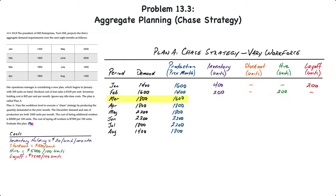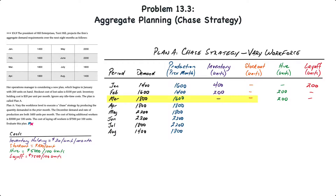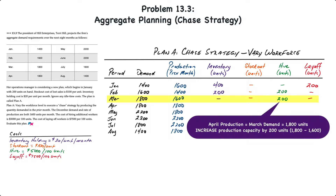In March, demand is 1,800 units and production is 1,600 units. Ending inventory is zero: 200 units from February plus 1,600 produced minus 1,800 sold equals zero — and also zero stockout, because we have exactly enough to cover demand. Looking ahead to April, production will ramp up to 1,800 units from 1,600 units in March, requiring us to hire two additional employees. That cost is incurred in March so workers are ready to produce in April.